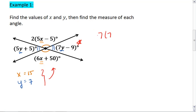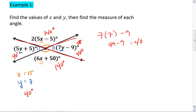We get 7 times 7, minus 9, 49 minus 9, 40. This one is 40 degrees, which means this one is also 40 degrees. Because a linear pair is 180, then this angle must be 140 degrees, which means this angle is also 140 degrees. So our angles are 40 degrees, 140 degrees, 40 degrees, and 140 degrees.